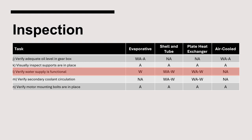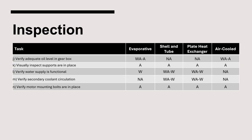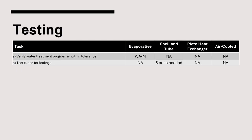Verify the water supply for the condenser is functional. This can be accomplished by observing the water level inside the condenser. Next, verify the motor mounting bolts are in place. The pump motor is secured horizontally to the condenser. Ensure to inspect fan motor mounting bolts as well. Testing requirements for evaporative condensers include verifying the water treatment program is within tolerance. Lastly, testing tubes for leakage every five years or as needed is required for shell and tube condensers.